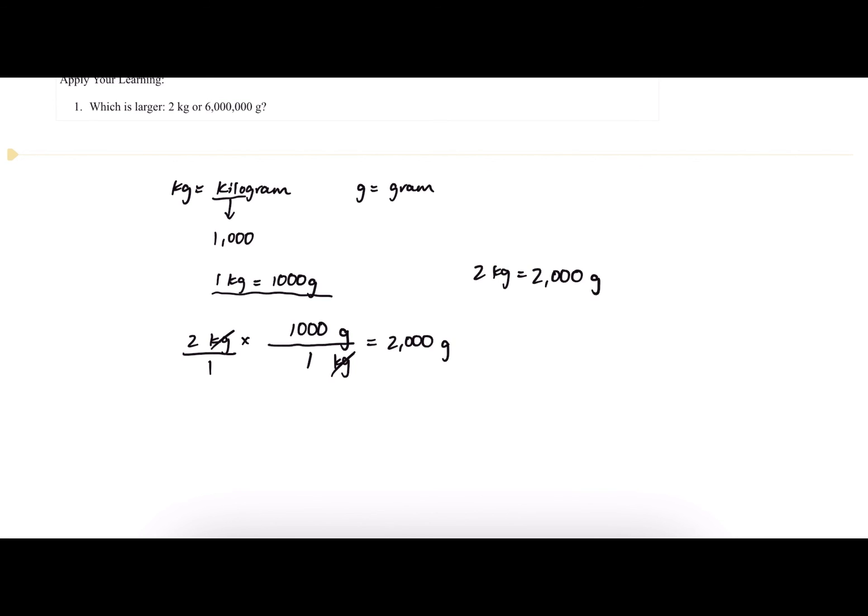When we compare this to our 6 million grams, we can see that 2 kilograms is less than 6 million grams. So 6 million grams is larger.